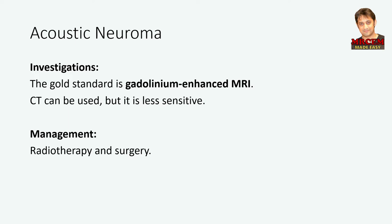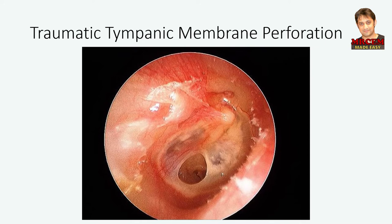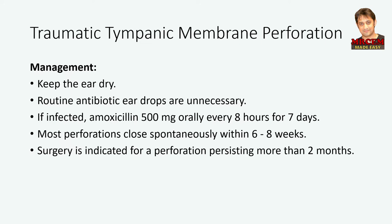Let's talk about traumatic tympanic membrane perforation. Traumatic perforation of the tympanic membrane causes sudden severe pain sometimes followed by bleeding from the ear, hearing loss, and tinnitus. Perforation is generally evident on otoscopy. Advise the patient to keep the ear dry. Routine antibiotic ear drops are unnecessary. But if the ear becomes infected, amoxicillin 500 mg orally every 8 hours is given for 7 days. Most perforations close spontaneously within 6-8 weeks. Surgery is indicated for a perforation persisting more than 2 months.